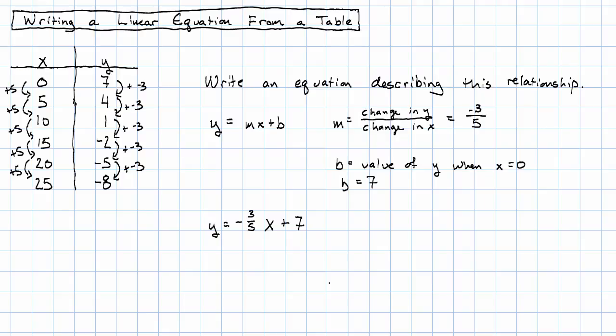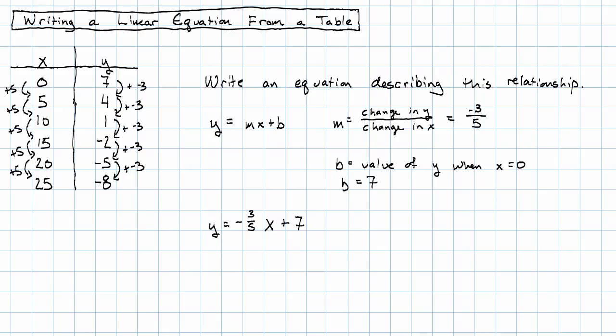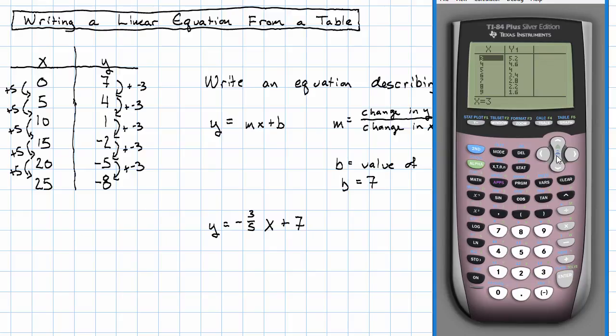Let's see how we can use the calculator to check. I'll enter negative 3 fifths x plus 7. I'll look at my table.